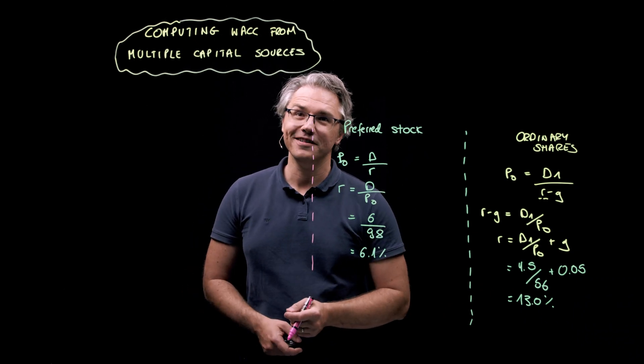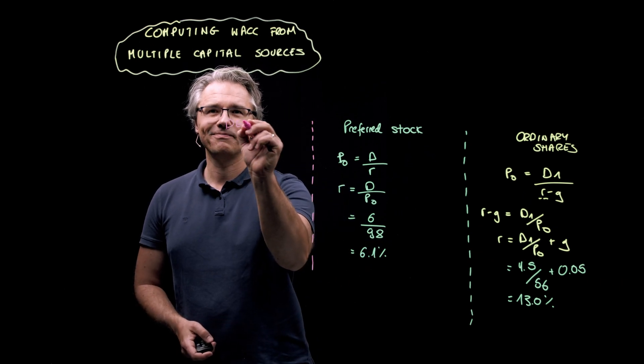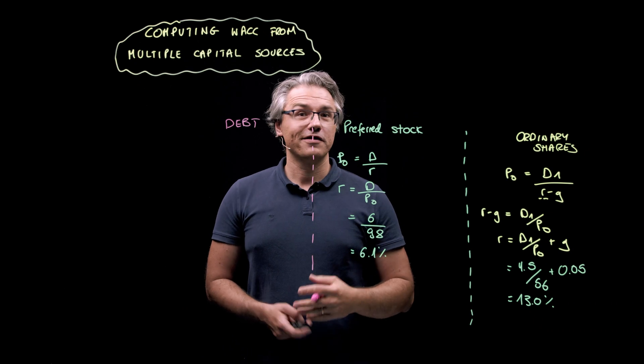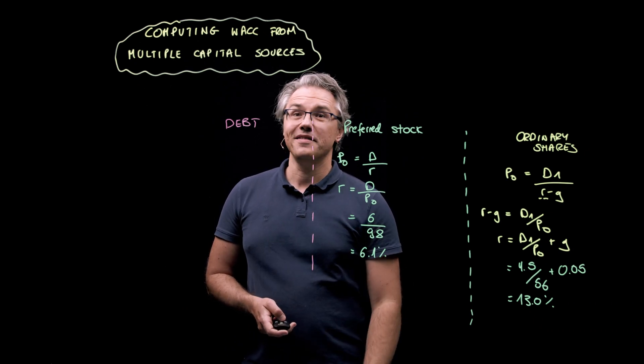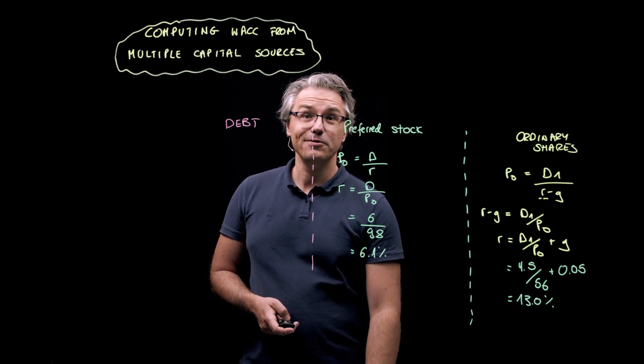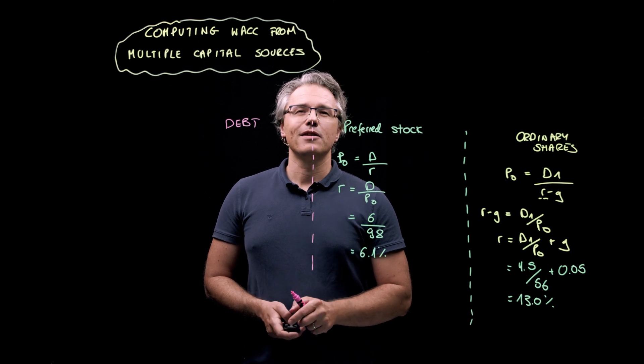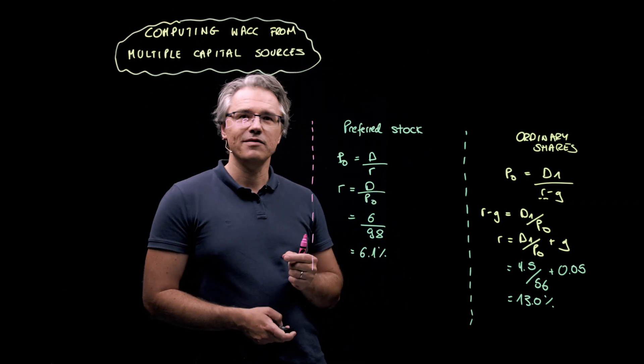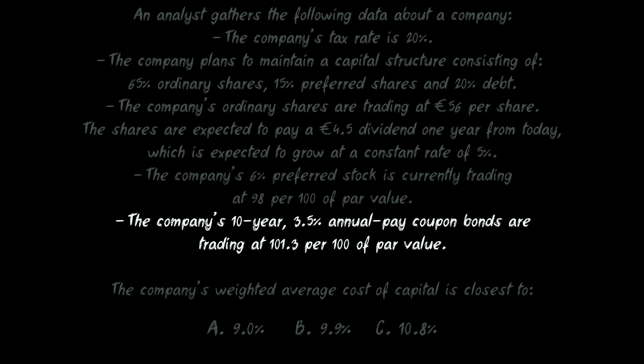And finally, we need to compute the rate of return required by the providers of debt. And this is synonymous with computing the yield to maturity on the company's bonds. And in order to do this, you need to use the TVM worksheet on your calculators. So, let's just remind ourselves of what the inputs should be. The company's 10-year, 3.5% annual pay coupon bonds are trading at 101.3 per 100 of par value.